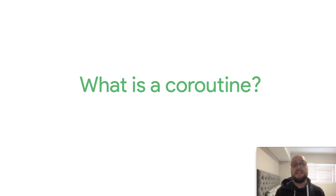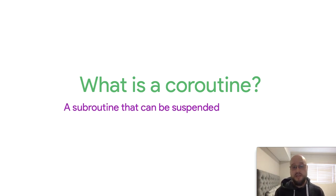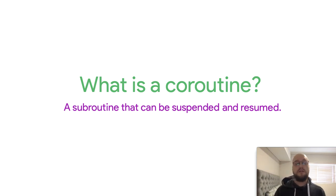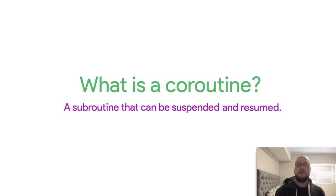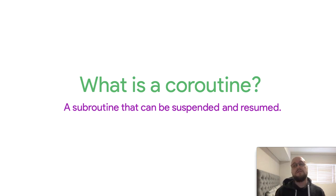First off, what is a coroutine? This was defined in, I think, 1958 in assembly language. The basic premise is: a coroutine is a subroutine that can be suspended and resumed. From a programming perspective that's actually a really big deal. We are used to working with blocking code — every time you run a function, that function will run to the end. It cannot be cancelled or stopped. You can only have internal controls that allow it to exit. Coroutines introduce suspendable functions, which is different.